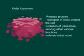There is the Golgi apparatus, which processes proteins and handles transport of lipids around the cell. It also does the creation of lysosomes, among other various functions. That is a referee locker room — it serves as a storage unit and just an all-around room where a lot of things happen.